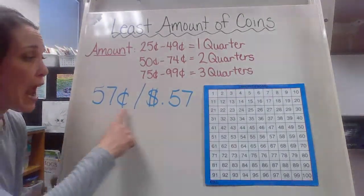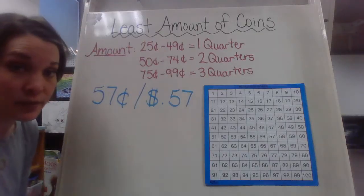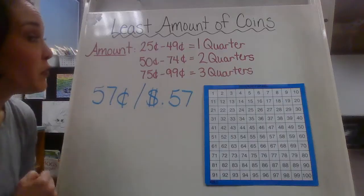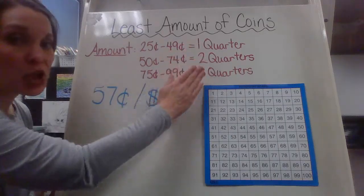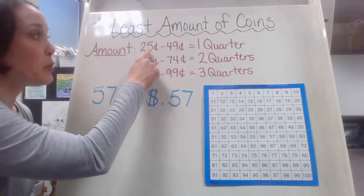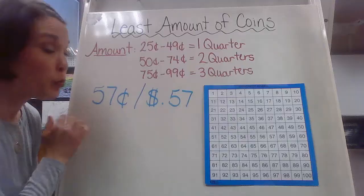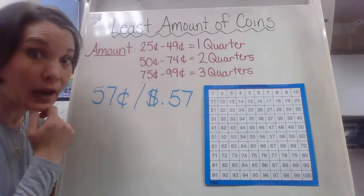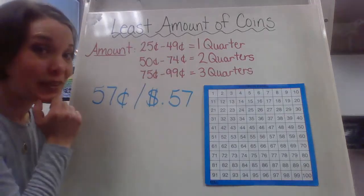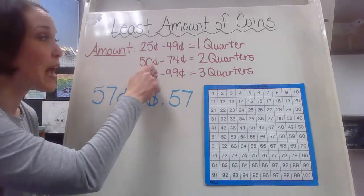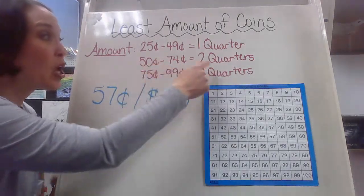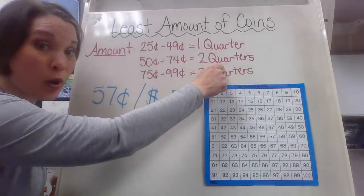Now we're looking at 57 cents. Let's take a look at the cheat sheet. Where does 57 lie? Is it between 25 and 49? No, because 57 is greater than 49. Does it lie between 50 and 74? Yes, because 57 is only seven more after 50. So it's right in that range, which means I'm going to need two quarters.